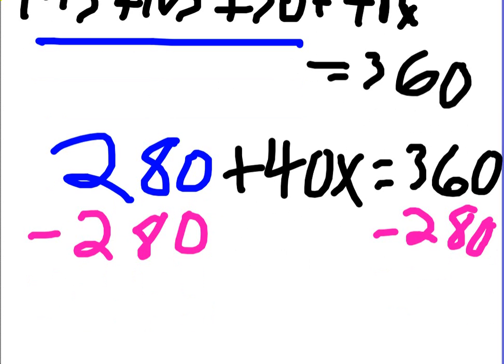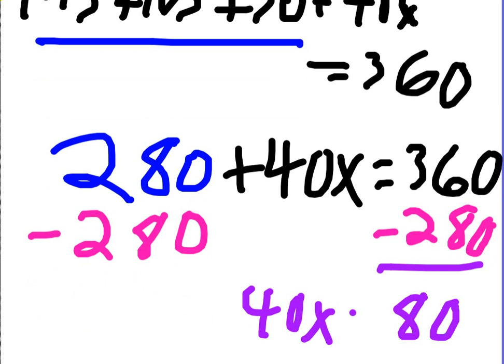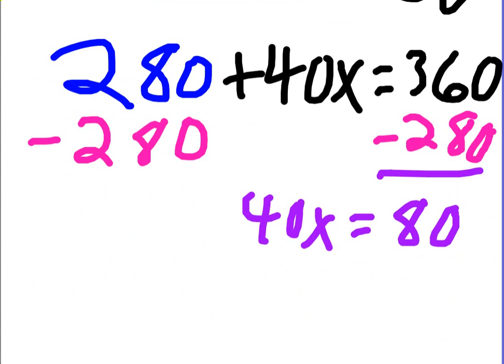All right, what's 360 minus 280? 80. So we get 40x equals 80, almost there. What would you do next? Divide by 40. Very good. Divide both sides by 40.